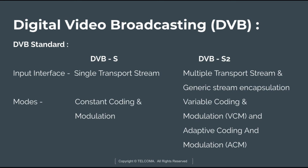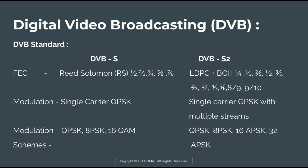The next difference is Forward Error Correction (FEC). In DVB-S, Reed-Solomon coding is used with code rates of 1/2, 2/3, 3/4, 5/6, and 7/8. In DVB-S2, LDPC (Low Density Parity Check) combined with BCH coding is used, with code rates of 1/4, 1/3, 2/5, 1/2, 3/5, 2/3, 3/4, 4/5, 5/6, 8/9, and 9/10.